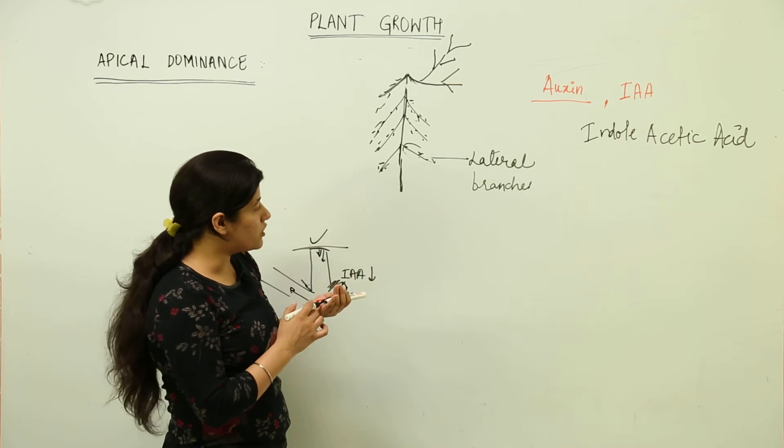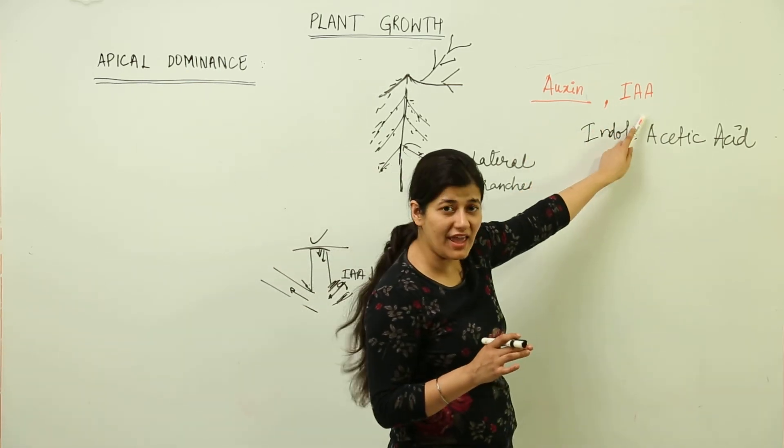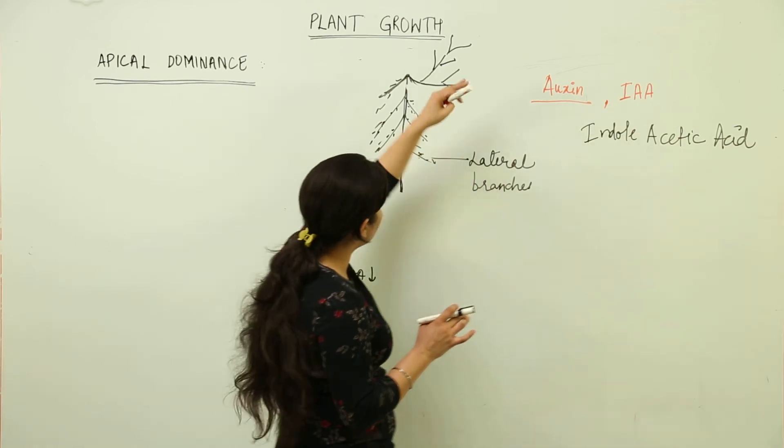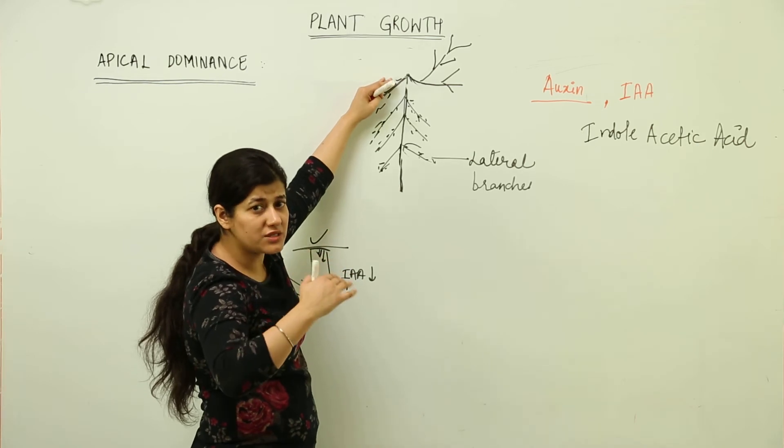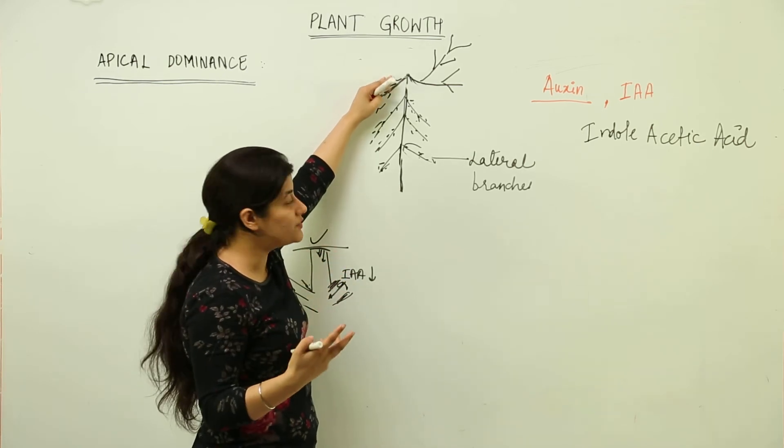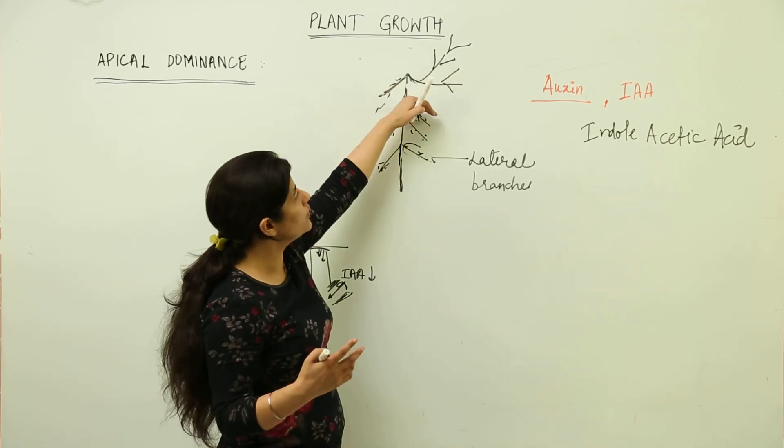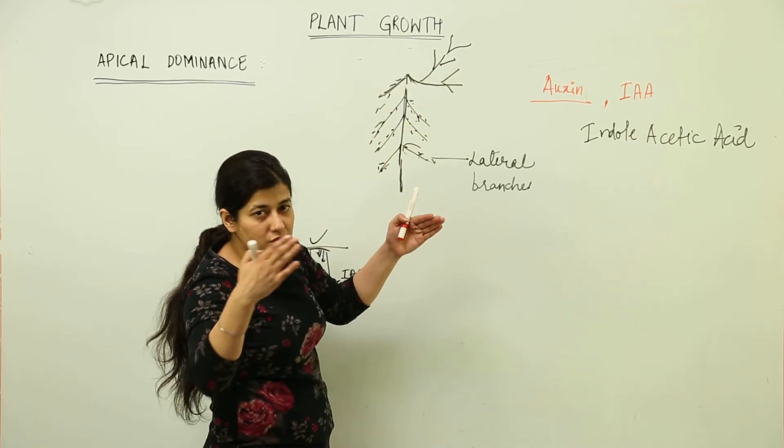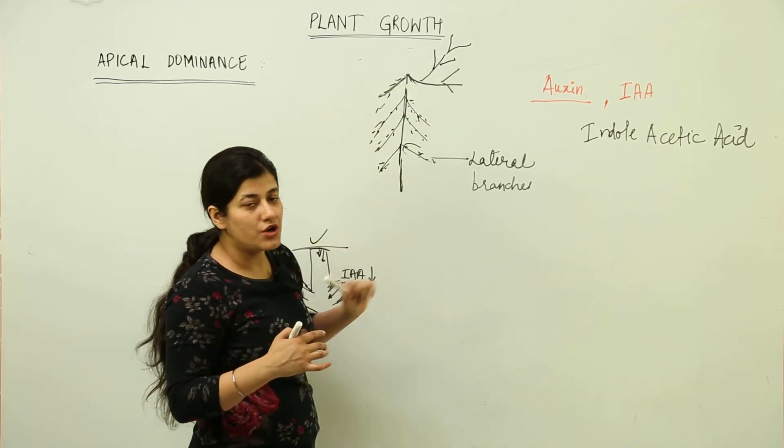When we talk about apical dominance, we say it is a function of IAA and auxins. When the shoot tip is removed where apical dominance was clearly visible, it would be shown by the other lateral branches which are in contact with the apex. As soon as the apex has been removed, the lateral branches take over.